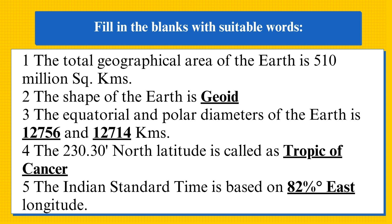The first part is fill in the blanks with the suitable words. The first question: the total geographical area of the earth is 510 million square kilometers. Second, the shape of the earth is geoid. Third, the equatorial and the polar diameters of the earth are 12,756 and 12,714 kilometers. Fourth, the 23½° north latitude is called the Tropic of Cancer. Fifth, the Indian standard time is based on 82½° east longitude.